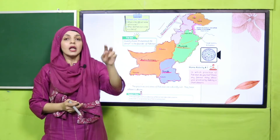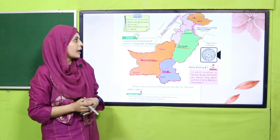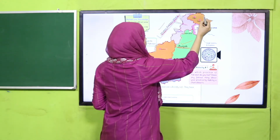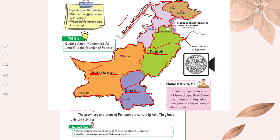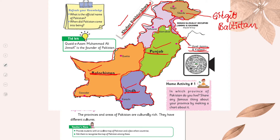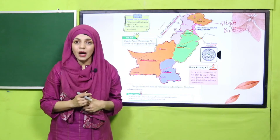Now we will look at the important areas of Pakistan. The yellow one at the top is called Gilgit Baltistan. What is it called? Gilgit Baltistan. Very good. This light purple portion — very small — is also an area of Pakistan called Azad Jammu and Kashmir. The third important area is the capital, which is called Islamabad.